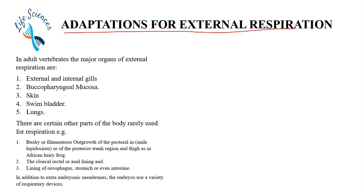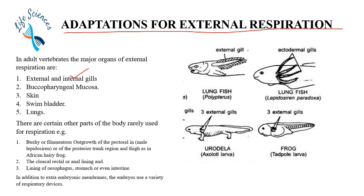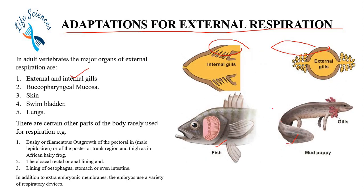Adaptations for external respiration in adult vertebrates: the major organs of external respiration are external gills and internal gills. You can see here these are the external gills, shown in lungfishes, urodeles, and frogs. These are the internal gills found inside fish. The external gills are visible on the outside, while internal gills are inside.